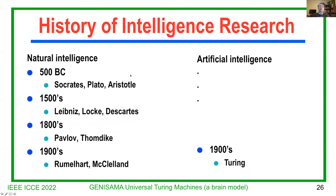History of AI. AI has a long history — over 70 years — but human intelligence research started a long time ago. Around 15 BC, we have Socrates, Plato, and Aristotle, who mostly talked about philosophy. In the 1500s, Leibniz, Locke, Descartes. In the 1800s, Pavlov and Thorndike. In the 1900s, Rumelhart and McClelland, who played an important role in neural networks. I think neural networks start from Turing's 1950 paper. Since then, the 1950s, machines started to be involved in intelligence.